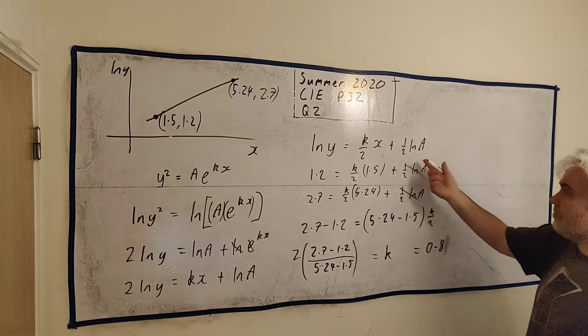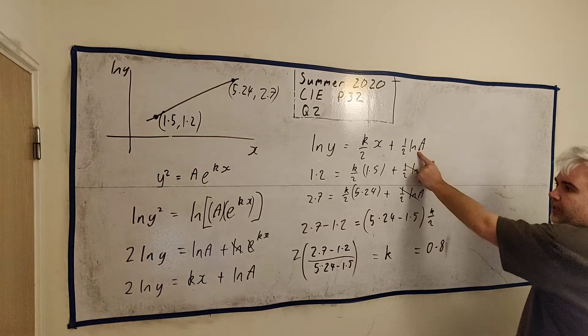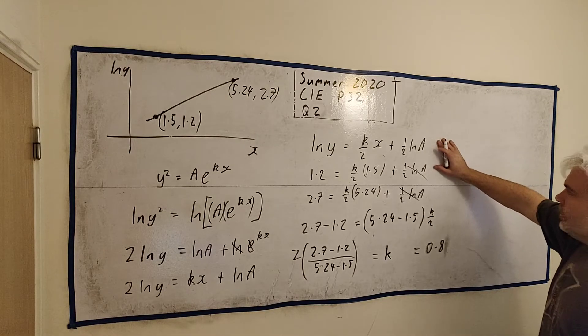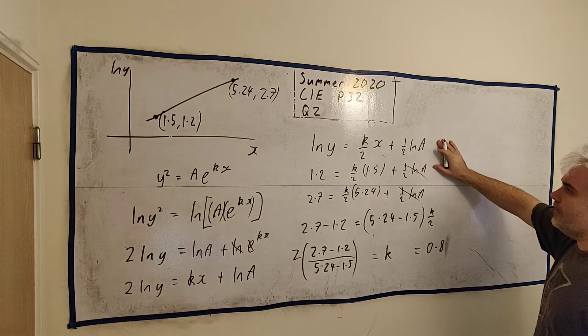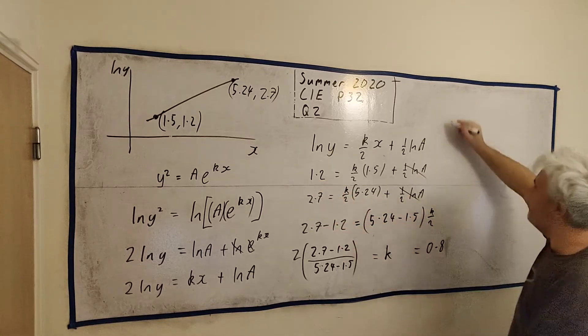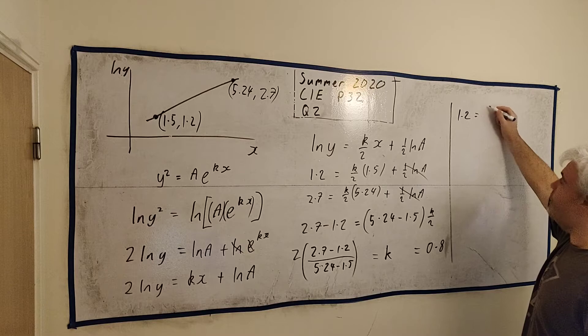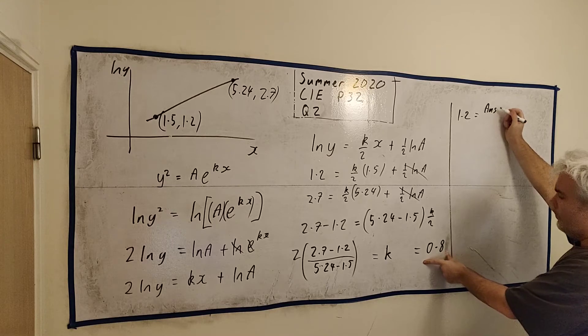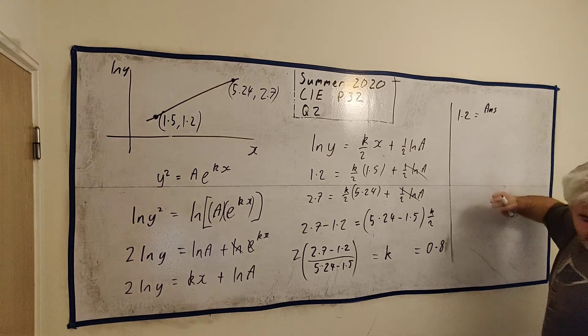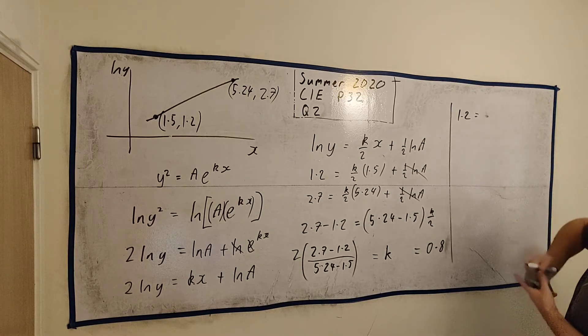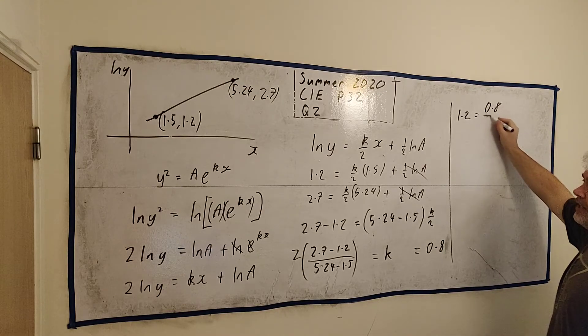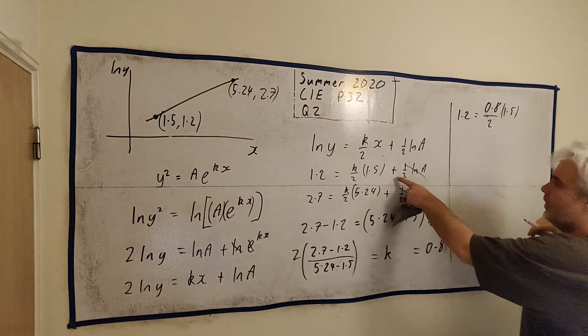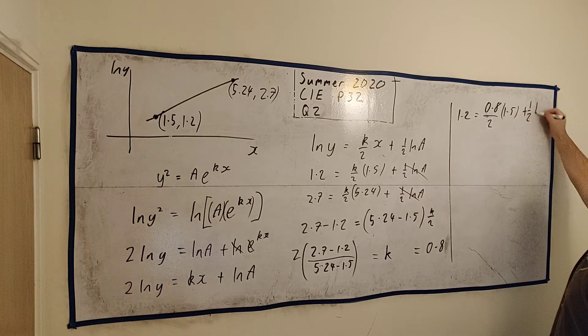And to find a, you just use any of the equations that you want. I'd suggest one of these up here, let's use this one here. We get 1.2 is equal to, and I go ahead and use my calculator here, I put in answer, that way I have this exact number. It'll work out fine because we're not doing anything too complicated. 0.8 divided by 2 multiplied by 1.5 and plus a half natural log A. I'll do this quickly, we're all used to how to do algebra at this stage. I'll get natural log A on its own and that is equal to 1.2 minus 0.8 over 2 times 1.5. And I'd like to multiply everything by 2. That would work out for me.